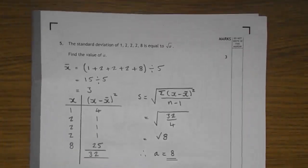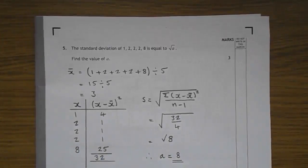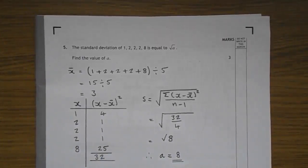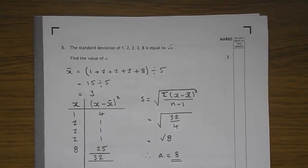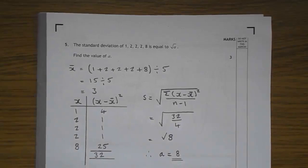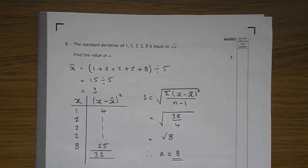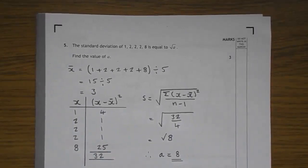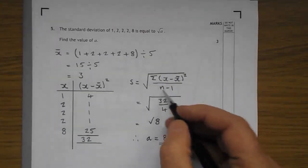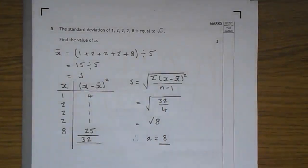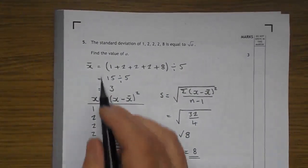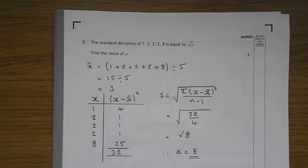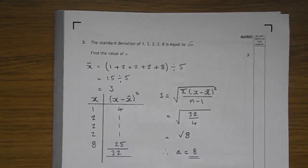On to question 5. The standard deviation of the numbers 1, 2, 2, 2 and 8 is equal to root A. Root something. And you have to work out the value of A. We're going to use that standard deviation formula from the formula sheet. So, here we go. The first thing you have to do, as you know, is to get the mean. 1 add 2, add 2, add 2, add 8 gives you 15. Divided by 5 gives 3.